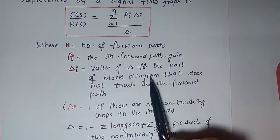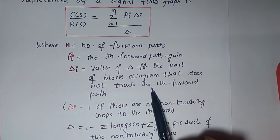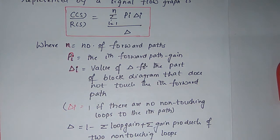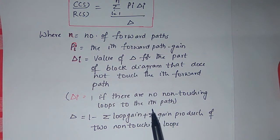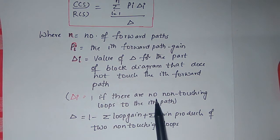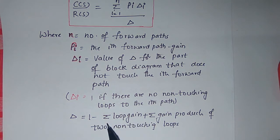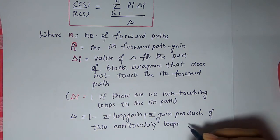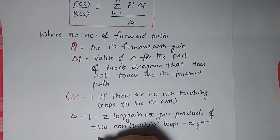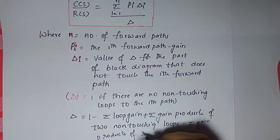Δi is the value of delta for that part of the block diagram which is not touching its forward path — that is, the gain of those loops not touching the forward path. If there are no non-touching loops, then Δi is simply 1. If there is one loop not touching the forward path, Δi = 1 minus the gain of that loop. Delta overall is: 1 minus sigma of individual loop gains, plus sigma of gain products of two non-touching loops, minus sigma of gain products of three non-touching loops, and so on.